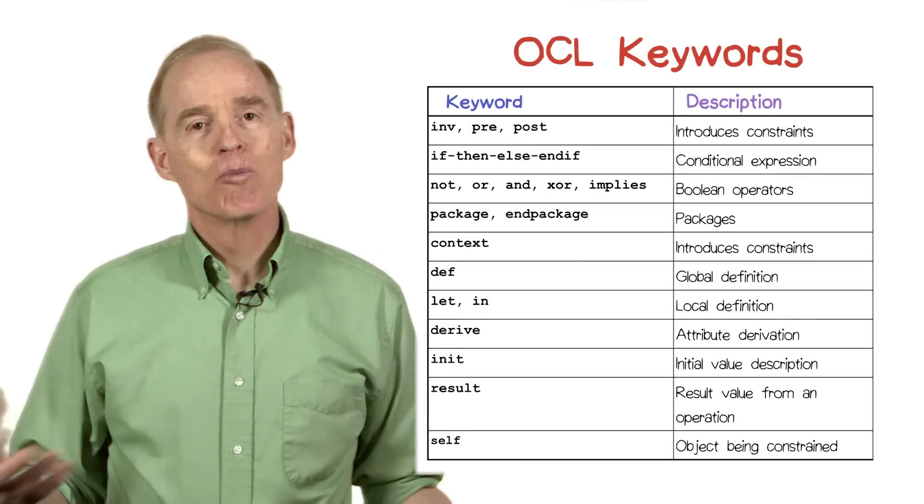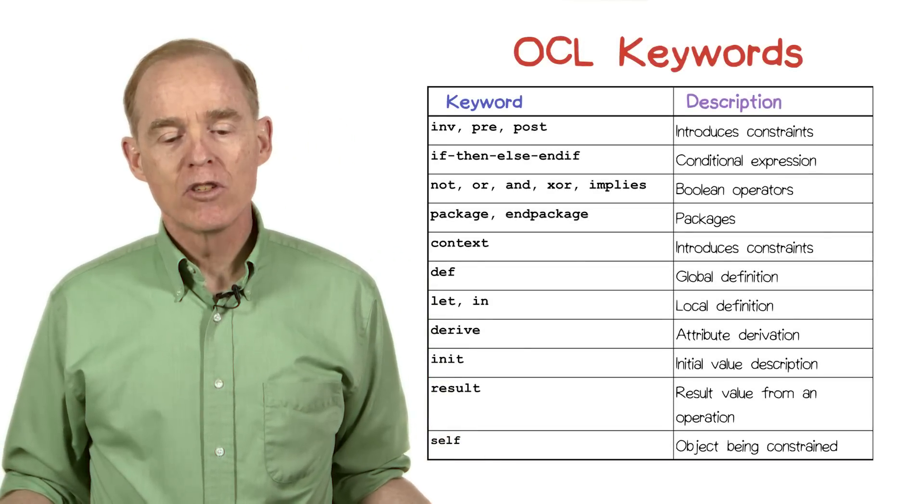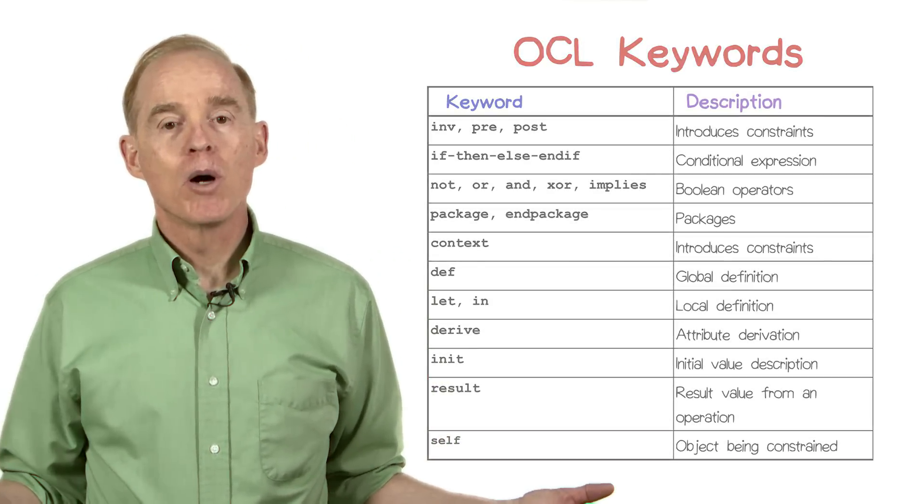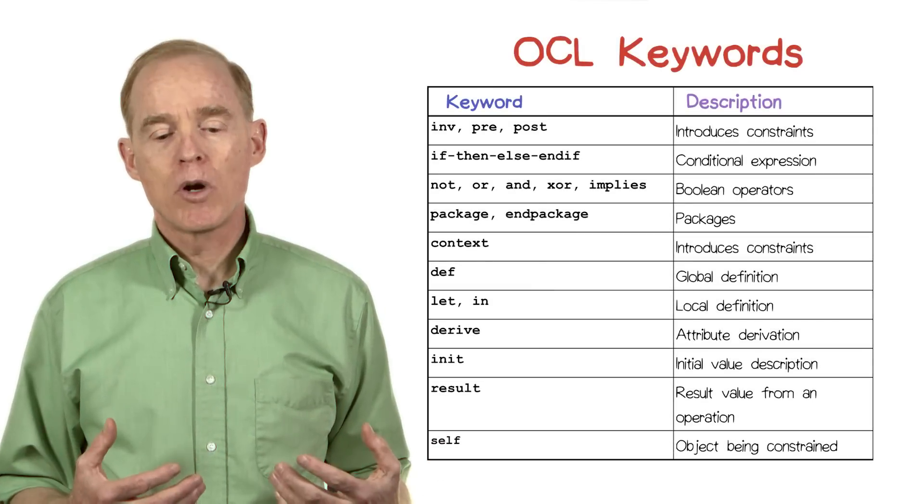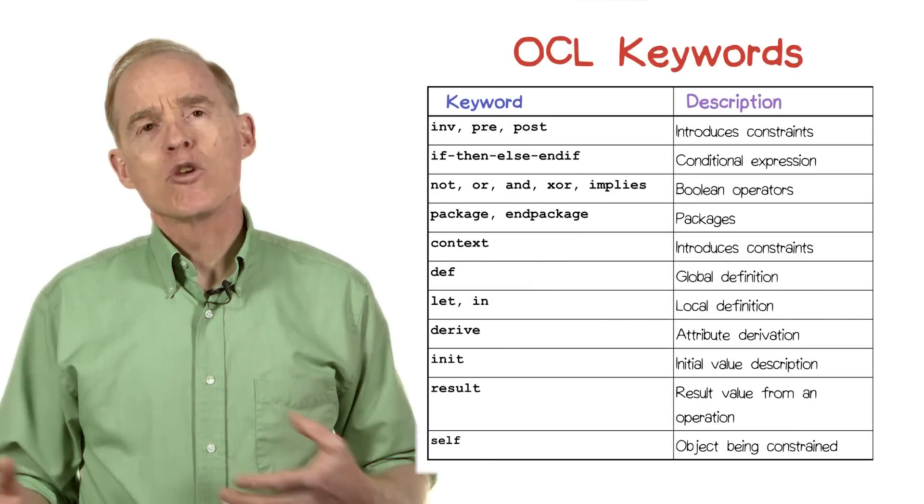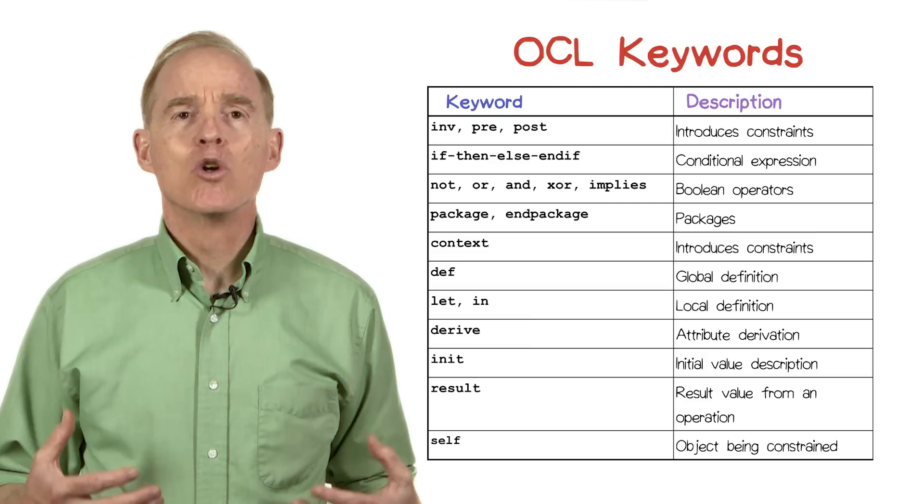The entire OCL language has a small set of keywords. We've already seen invariant, pre, and post. There's an if-then-else if you need that to describe conditional expressions. There are Boolean operators. There's a packaging mechanism that reflects UML's ability to partition things into packages.